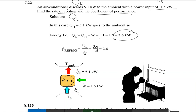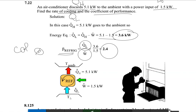The coefficient of performance of the refrigerator is the heat absorbed from the low-temperature reservoir divided by the work done. So 3.6 divided by 1.5 equals 2.4. That is the coefficient of performance, denoted as COP or beta for a refrigerator.